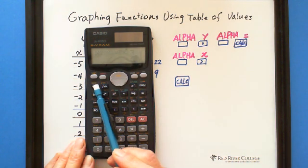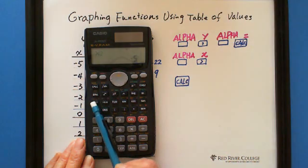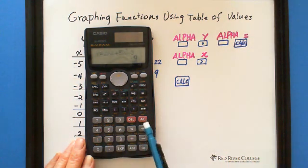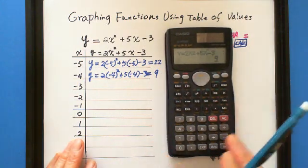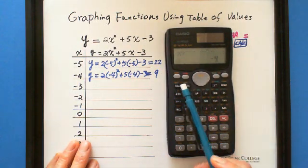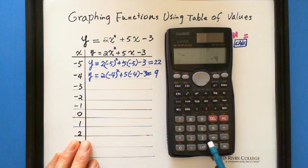And we enter CALC negative 4. They give you 9. We can enter negative 3. Hit this button. Negative 3. It gives you 0.